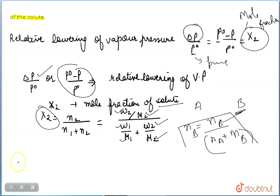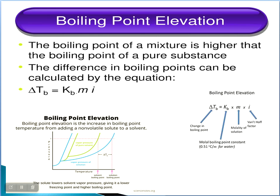Moving towards the next colligative property: boiling point elevation. Elevation means an increase — increase in boiling point. After adding the non-volatile solute, we have to increase the temperature so it can vaporize easily. The boiling point of the mixture is higher than that of the pure substance because of the added non-volatile solute.